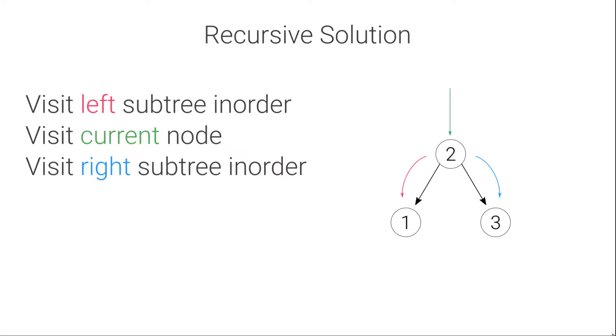Let's see how to do the in-order traversal of a binary tree using the recursive algorithm. The idea is to start at the root node and then visit the left subtree in order, visit the current node, and finally visit the right subtree in order.